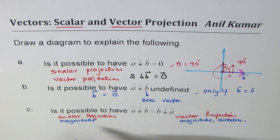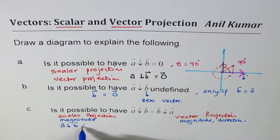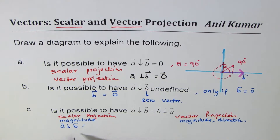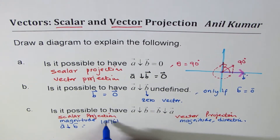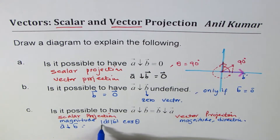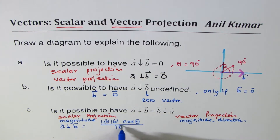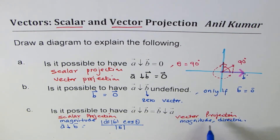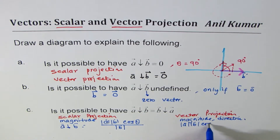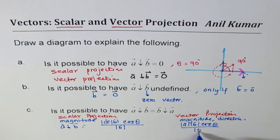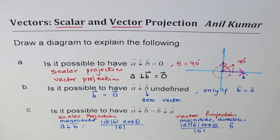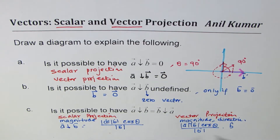The projection of vector a on b is: magnitude of a times magnitude of b times cos theta, divided by magnitude of b. For vector projection, it is magnitude of a times magnitude of b times cos theta over magnitude of b, in the direction of the unit vector b. This scalar quantity becomes a scalar multiple in the direction of b.